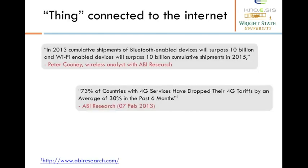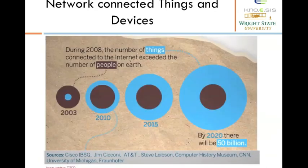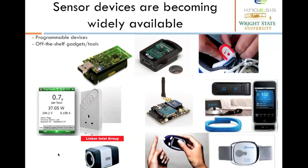The increasing number of devices connected to the Internet is notable. In 2015 it was expected that around 10 billion Wi-Fi and Bluetooth enabled devices would be shipped. Data connectivity cost has been constantly coming down. The number of devices connected to the Internet has been constantly increasing. In 2008 there were more things connected to the Internet than people on Earth, and by 2020 there are 50 billion devices expected to be connected.